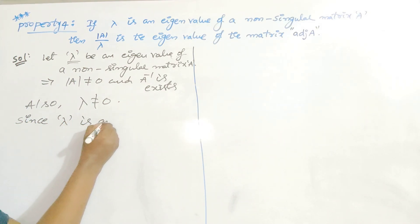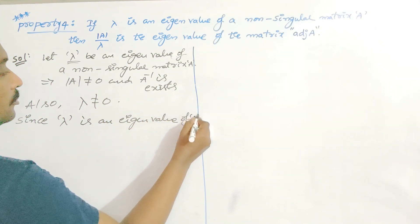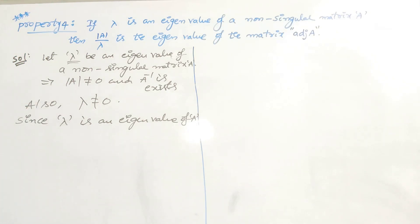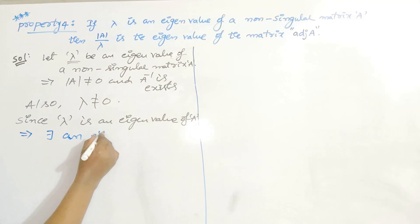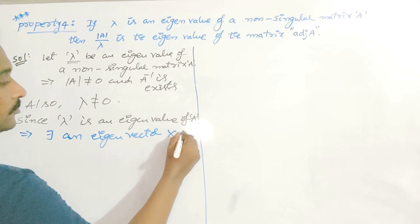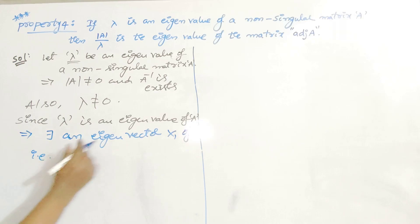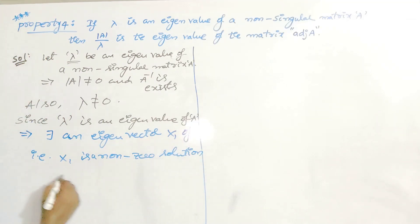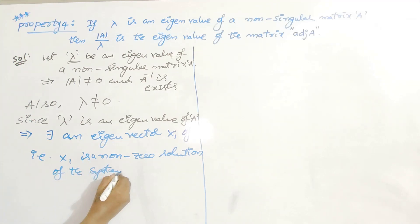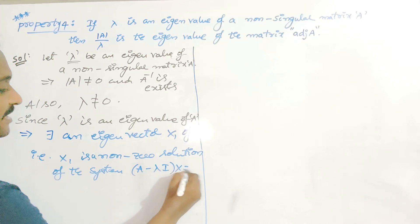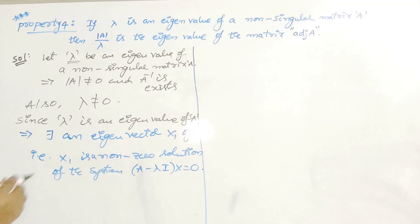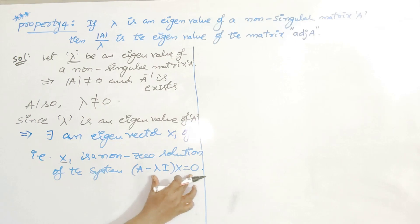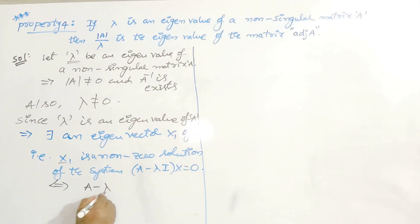Since lambda is an eigenvalue of A, for every eigenvalue there exists an eigenvector. I will take that eigenvector as x1. So there exists an eigenvector x1 of A, where x1 is a non-zero solution of the system A minus lambda I times x equals zero. Since x1 is the non-zero solution of this system, x1 satisfies this equation, so A minus lambda I times x1 is equal to zero.